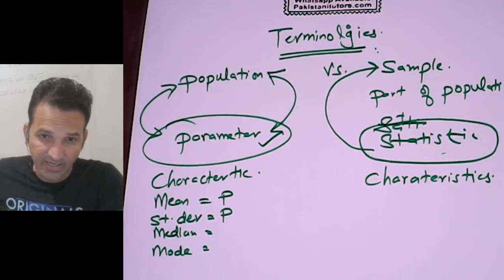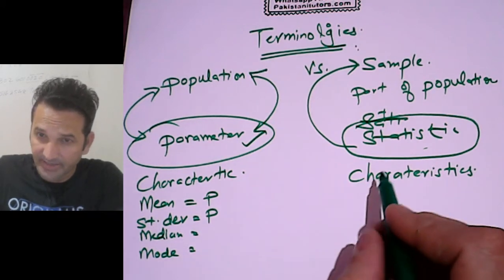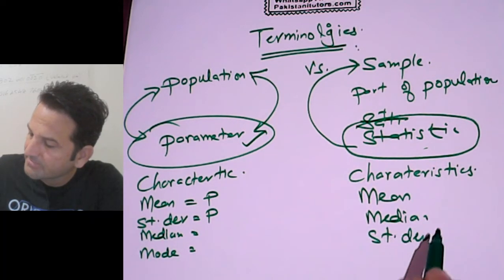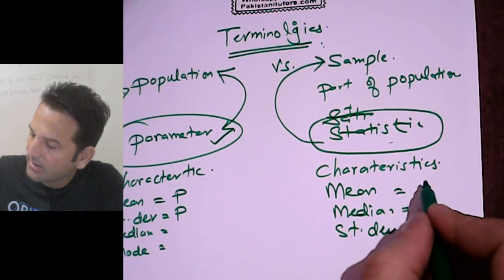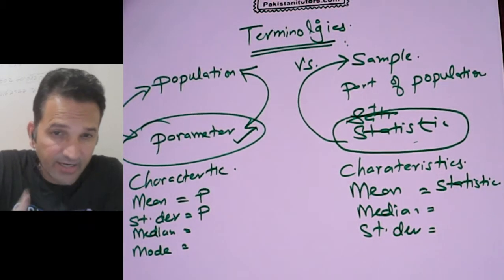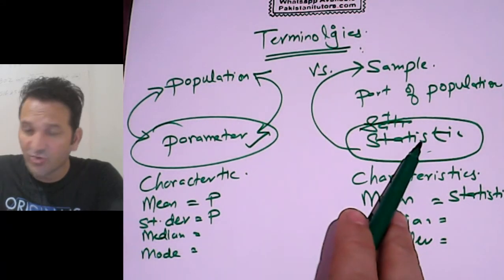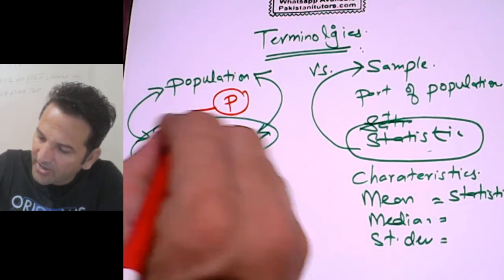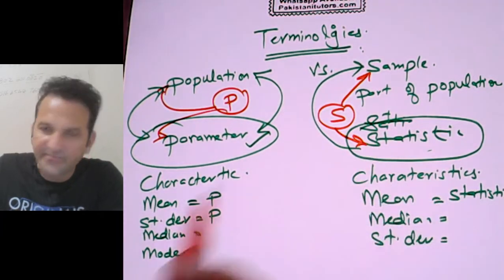All characteristics — mean, median, mode — found regarding a population are called parameters. The same characteristics — mean, median, standard deviation — of a sample are called statistics. To memorize this concept: P for population and P for parameter. On the other hand, S for sample and S for statistic.